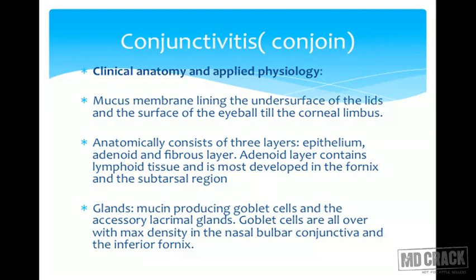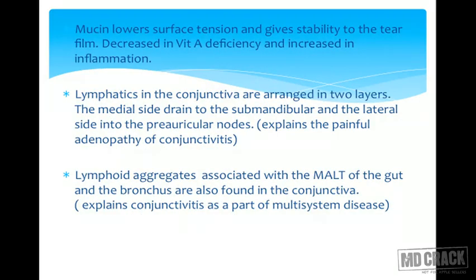The glands of the conjunctiva include mucin-producing goblet cells and accessory lacrimal glands. Goblet cells are spread over the conjunctiva with maximum density in the nasal bulbar conjunctiva and inferior fornix. Mucin lowers surface tension and stabilizes the tear film. Goblet cell density decreases in vitamin A deficiency causing dry eye, and overproduction of mucus in cases of inflammation can lead to ropy secretions as in allergic conjunctivitis.